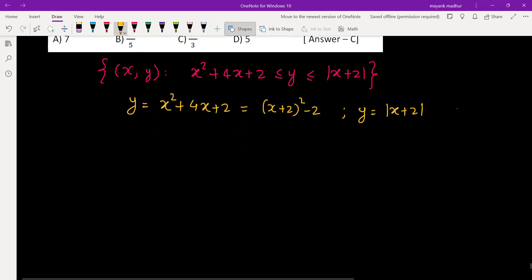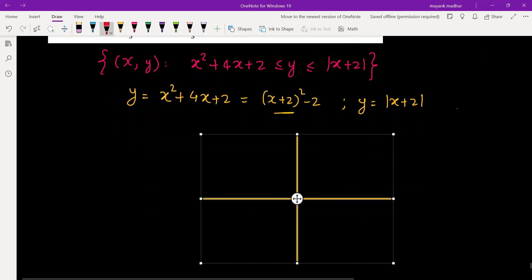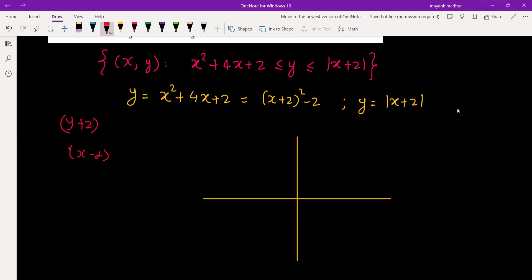Let's sketch these two graphs. The first one, y = (x + 2)² - 2, will be an upward parabola whose vertex is (-2, -2). We can rewrite this as (x - α)² = 4a(y - β), which is a shifted upward parabola. Its vertex is (-2, -2), somewhere in the third quadrant, and the graph will be something like this.